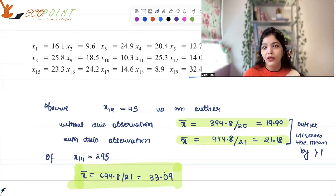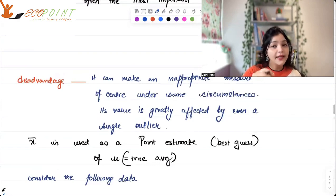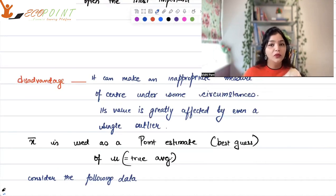So, this is the major problem of using mean as the measure of location here. Because it's not giving the correct true picture of the data. But having said that, x bar is generally taken as a point estimate. It's the best guess of mu. Mu which is the true average. x bar is the point estimate that is the best guess.